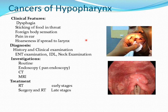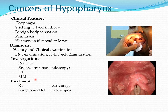Diagnosis includes clinical examination, indirect laryngoscopy, nasopharyngoscopy, and neck palpation. Investigations include routine blood tests, then panendoscopy — laryngoscopy, esophagoscopy, and bronchoscopy — to take biopsy, assess tumor extent, and check extension to the esophagus. CT and MRI help diagnose the spread into the neck and lymph nodes. Treatment is combined: radiotherapy in early stages and surgery in late stages, combined with radiotherapy.